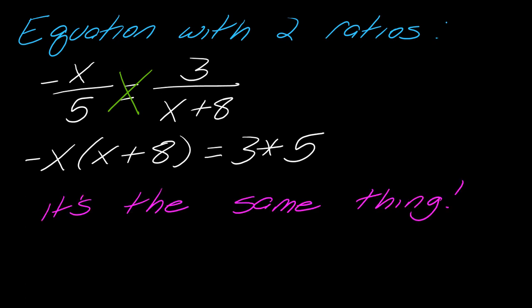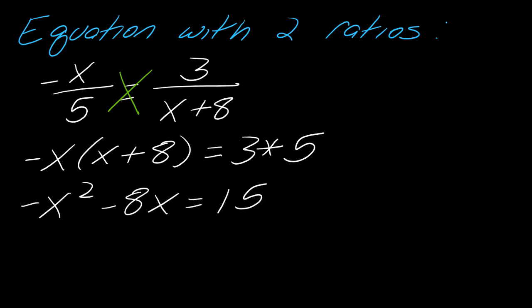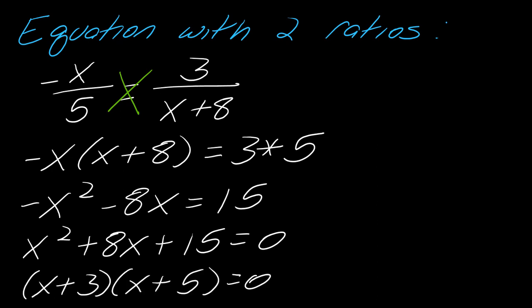From here, just to finish solving this out, I distribute that x. Then I'll bring these two terms over to this side, so I get this result here. Then I can factor, so my solutions in this case would be x equals negative 3 or x equals negative 5.